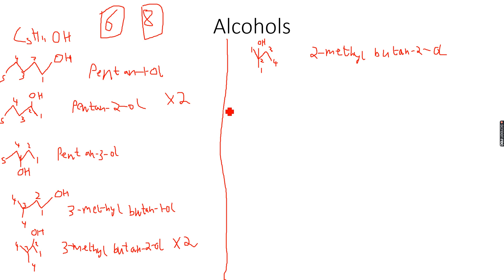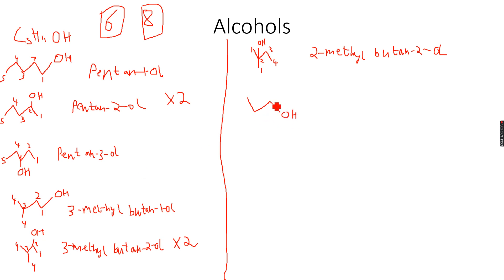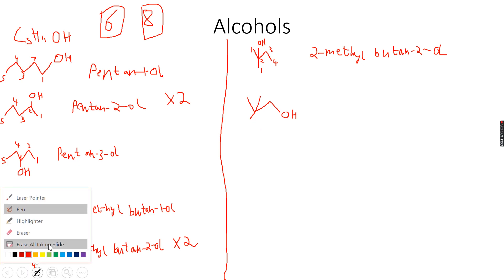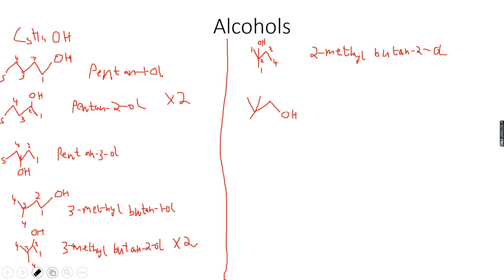Let me quickly do a three-carbon check once again because I don't want to miss anything. If I place an OH group here with one, two, three, four, and five — actually, yes, I can have a three-carbon chain! So we were wrong: there can be a three-carbon main chain.